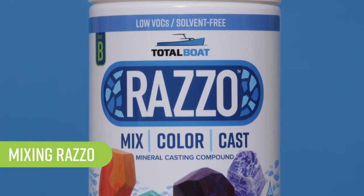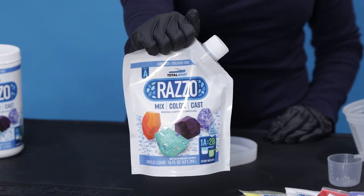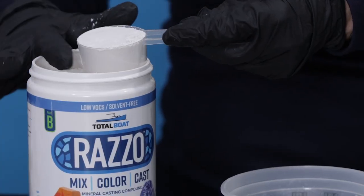Mixing Razzo: Razzo comes with Part A, which is an acrylic liquid, and Part B, which is a mineral powder.